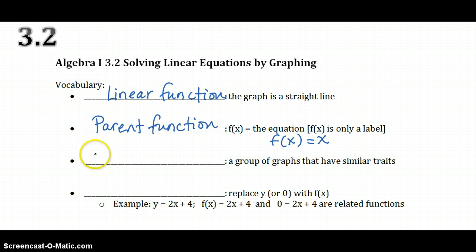If there's parents, then there must be a family. A family of graphs is a group of graphs that have similar traits, kind of like a normal family. And then you have relatives, called related functions.